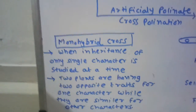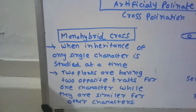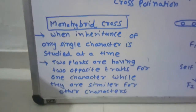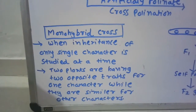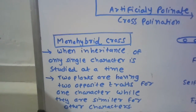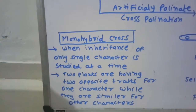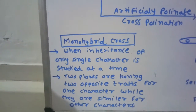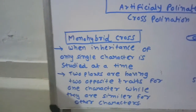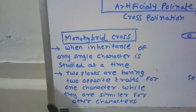The plants which are hybridized in a monohybrid cross have opposite traits for a single character; otherwise, for other characters, they have a uniform phenotype. इसका मतलब है कि जब दो plants के बीच monohybrid cross किया जाता है, तो ये दोनों plants सिर्फ एक character के दो opposing traits दिखाते हैं, बाकी के दूसरे characters के लिए ये uniform होते हैं।